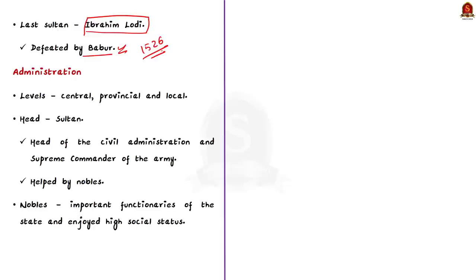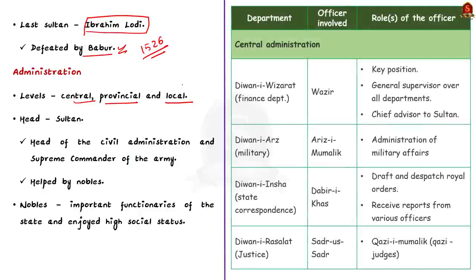For any king or empire to rule, we need an administrative system. The Sultanate also had an administrative system. The Sultans were aware that they had to rule over a population that was largely non-Islamic. This awareness led to the emergence of administrative institutions at the central level, provincial level, and local level. The local level administration was left mainly in the hands of village headmen. The administrative apparatus was headed by the Sultan, who was the head of civil administration and supreme commander of the army. Sultan was helped by various nobles, who were the most important functionaries of the state.